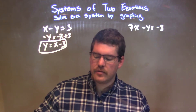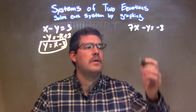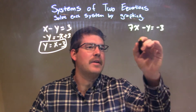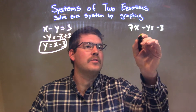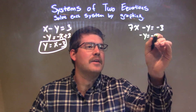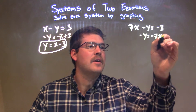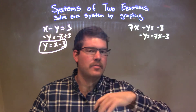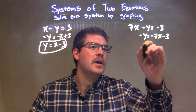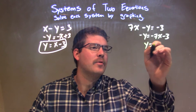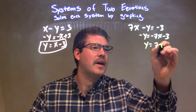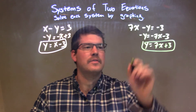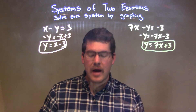For the second equation, same thing — get y by itself. Subtract 7x from both sides, which gives us negative y equals negative 7x minus 3. Divide both sides by negative 1, and we have y equals positive 7x plus 3. So here are the two equations that we will be graphing.